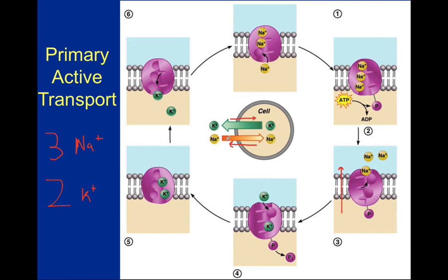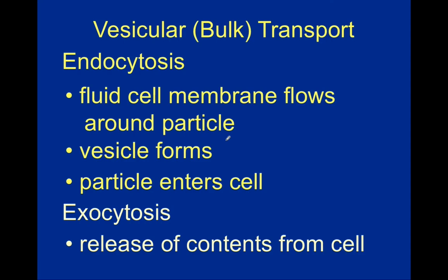Potassium came into the cell while sodium went out of the cell — this is primary active transport. Our final type of active transport is vesicular transport, which is transport within vesicles. Vesicles are sort of cell membrane bubbles within the cell membrane — tiny little compartments that transport substances throughout the cell. They can bring things into the cell and take things out of the cell. If something is coming into the cell, we call that endocytosis, and if something is leaving the cell, we call that exocytosis.